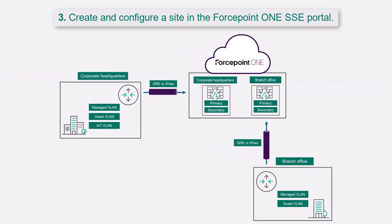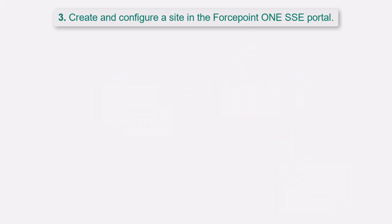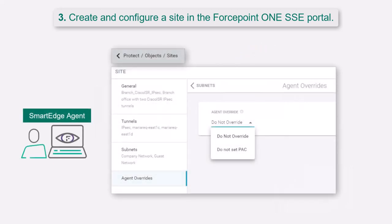Each customer location will have its own site with a primary and secondary cloud data center configured in the portal. You next need to define how devices with the Smart Edge agent installed will proxy web traffic when they visit the site. Selecting Do Not Overwrite configures the Smart Edge agent proxy to filter traffic before traversing the tunnel. Do Not Set PAC means that the Smart Edge agent will not enforce its own PAC file, which enables you to configure and host an alternative.